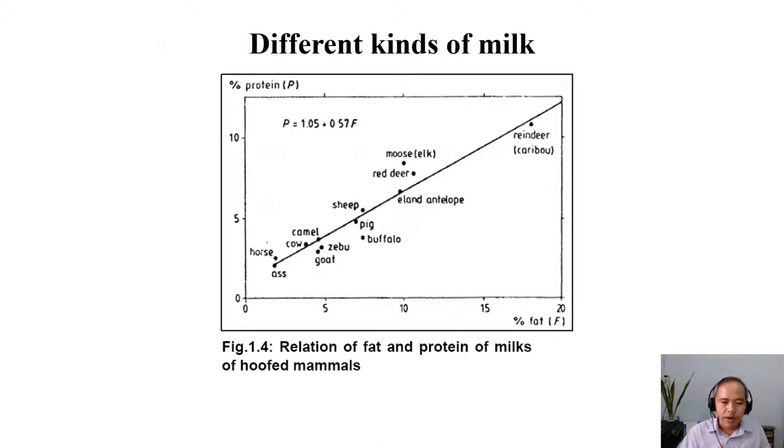What do we see here? This graph will show us the relation between protein content, if you look at the vertical axis, and then the horizontal axis is the fat content of the milk. Here is the cow milk. Cow milk, we already know that has 4% of fat and 3.3% of protein. Here, you look at other kinds of milk like pig milk. The pig milk has quite high fat content and quite high protein content compared to cow milk.